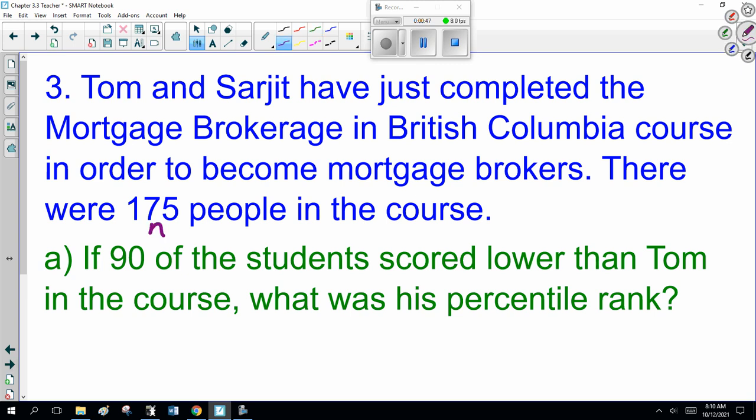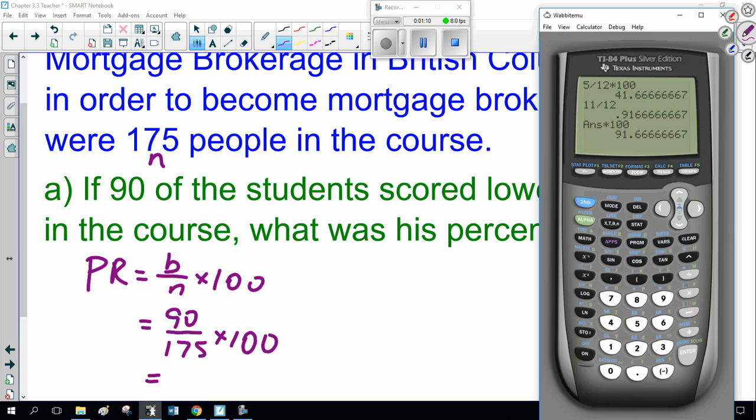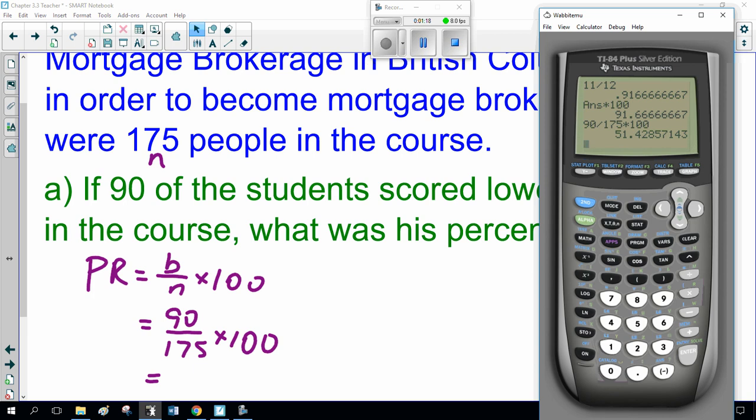And if 90 of these students scored lower than Tom in the course, what was his percentile rank? Well, PR, percentile rank, equals B over N times 100. So, 90 scored less. There were 175 people. And I can't do that math in my head. So, 90 divided by 175 times 100, 51.4.